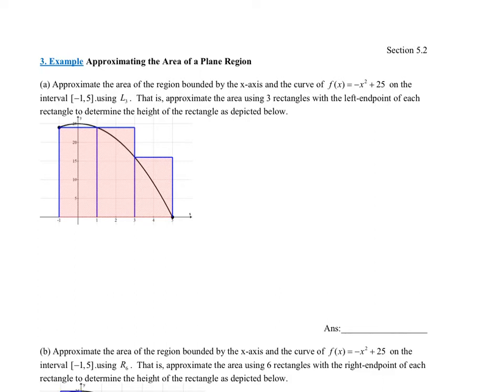The problem says: approximate the area of the region bounded by the x-axis and the curve f(x) = negative x squared plus 25, on the interval negative 1 to 5, using L3. So what does L3 mean? L3 means when I find the rectangles, I'm going to use the left endpoint of the rectangle — the function value of the left endpoint — to determine the height.